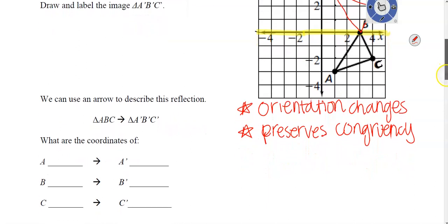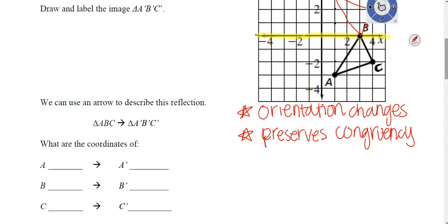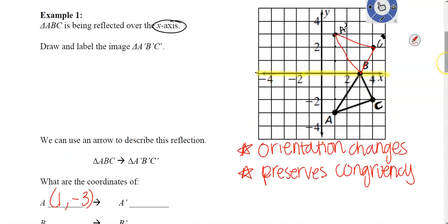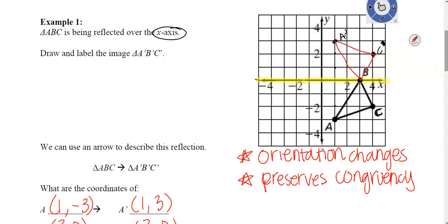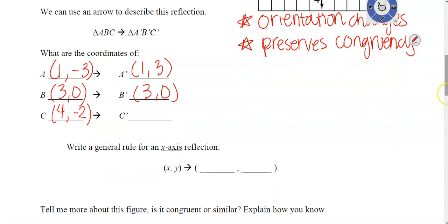Let's look at what happens to the points. Old A was (1, −3), new A is (1, 3). Old B was (3, 0) and the new one stays the same. Old C was (4, −2), and new C is (4, 2).